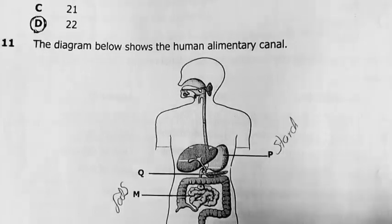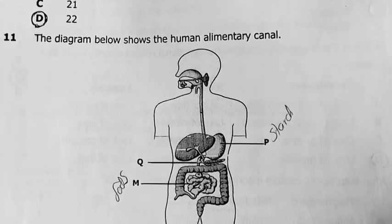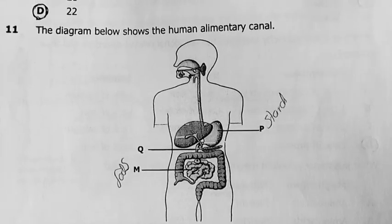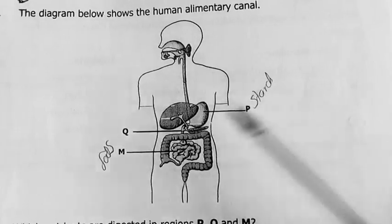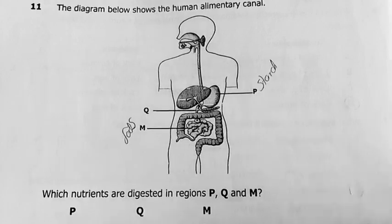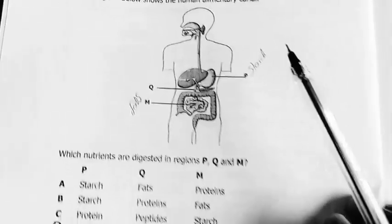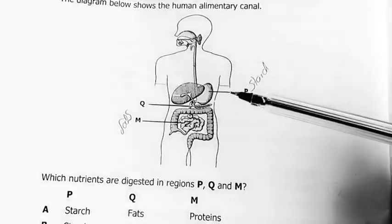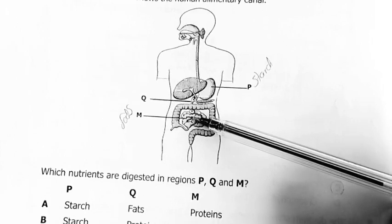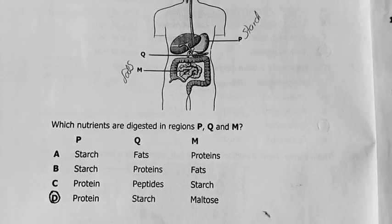The next question, number 11. The diagram below shows the human alimentary canal. Don't mind these scratches. I just picked up these papers from some old box. So we've got the diagram of the alimentary canal. We've got P, which is the stomach. Q, which is the duodenum. Then M, which is the ileum, or let me just say small intestine, the rest of the small intestine.